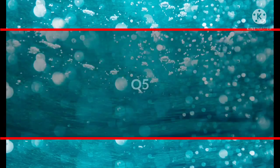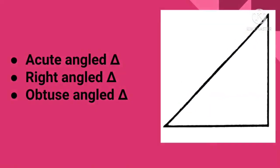Question number 5: Again, a triangle is given to you — identify the triangle and answer. Is it an acute angled triangle, a right angled triangle, or an obtuse angled triangle? Look at its angles carefully and then identify the type of triangle.